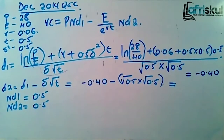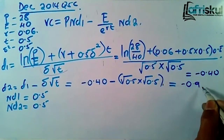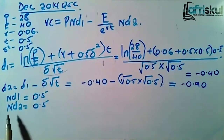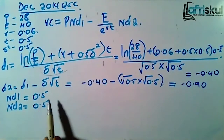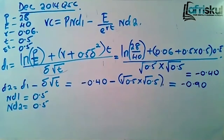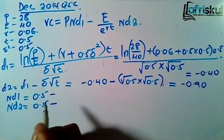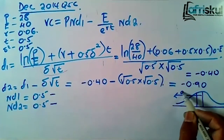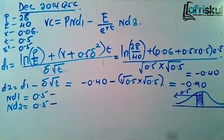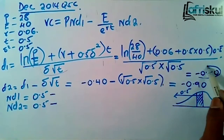D2 equals negative 0.40 minus square root of 0.5 times square root of 0.5, giving us negative 0.90. Now since both d1 and d2 are negative, that means they are on the lower side of the normal distribution. So you take 0.5 minus the table value. For example, for d1 we had 0.40, so come to the normal table at 0.40.